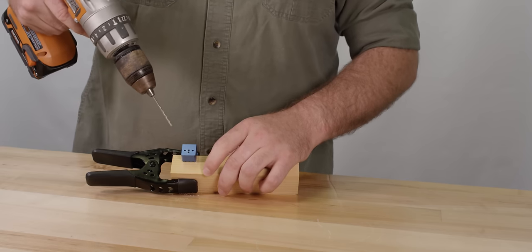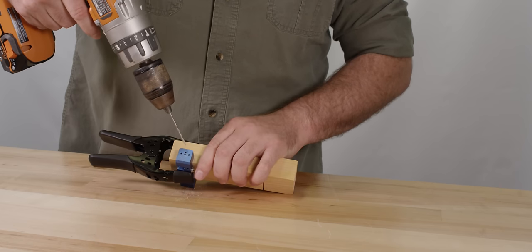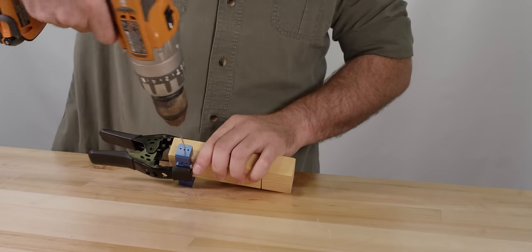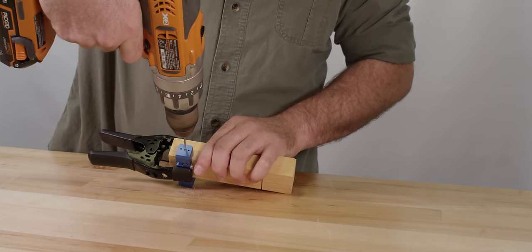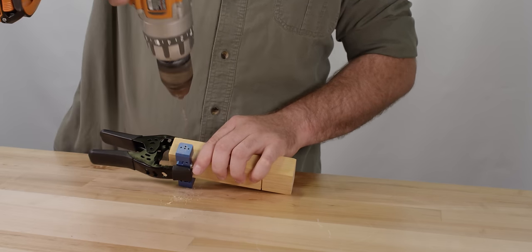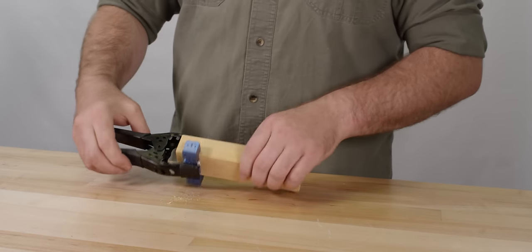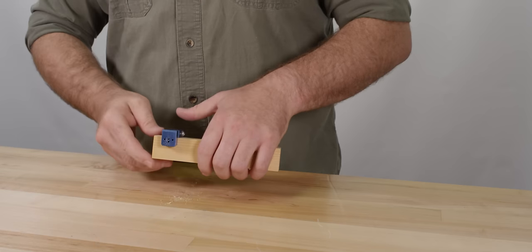The axle slots are now perfectly square, straight and round for the two front axles. Now with the driller still in place, we are going to drill a raised wheel axle hole. The raised wheel hole is the center bottom hole. Now remove the clamp and loosen the set screws to remove the driller.